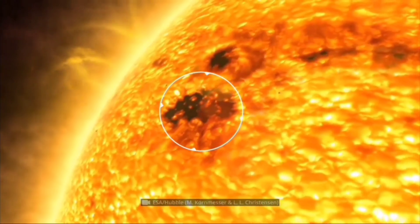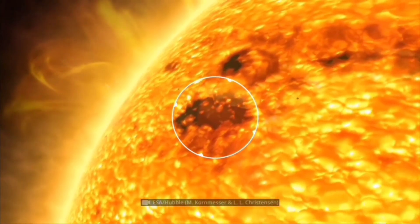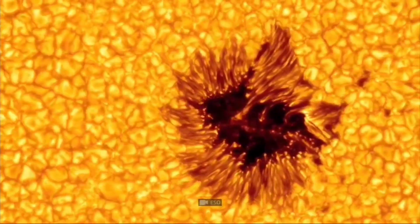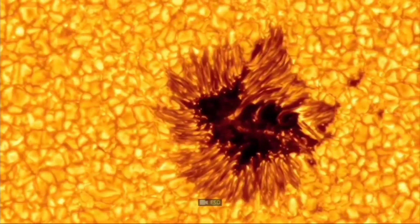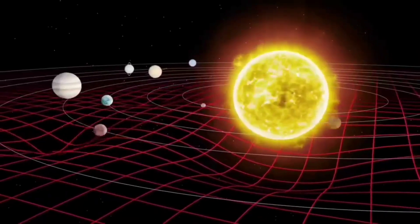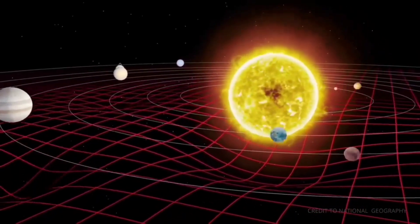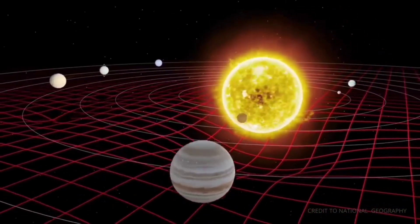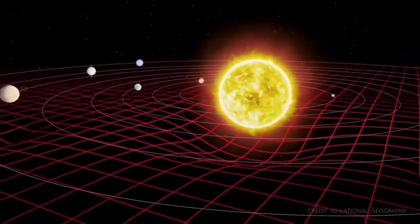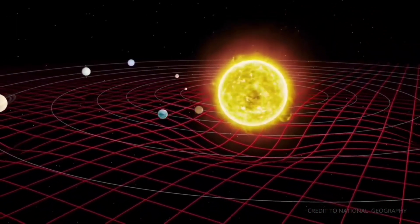Also, you can see sunspots, which are less heated areas than the surroundings, thus generating fewer photons and being dimmer. The sun is balanced by two forces: the outward force due to fusion and the inward pull of its own gravity.